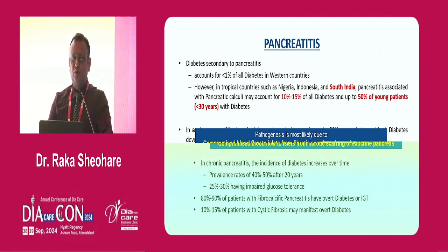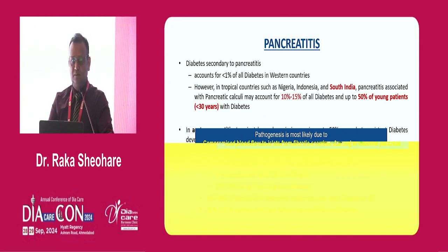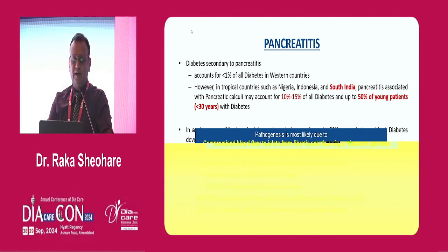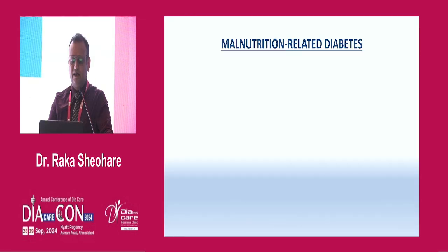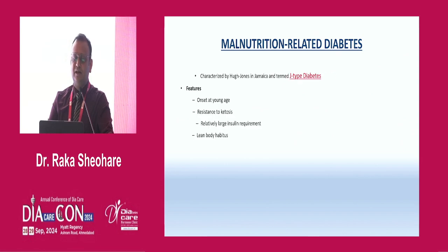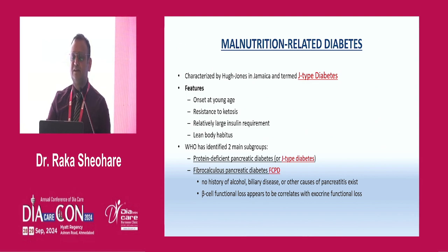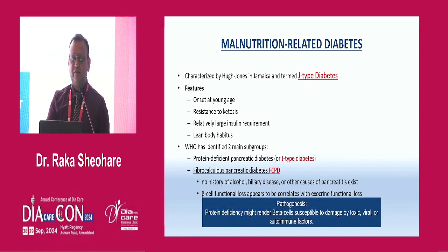80 to 90% of patients have FCPD — fibrocalcific pancreatitis — with overt diabetes or IGT. The pathogenesis is most likely due to compromised blood flow to islets from fibrotic scarring of the exocrine pancreas. Malnutrition-related diabetes has different nomenclature: from Jamaica it is called J-type diabetes; in India we call it FCPD, associated with South Indian patients. No history of alcohol, no biliary disease. Beta cell functional loss appears to be correlated with exocrine pancreatic loss. Protein deficiency may render beta cells susceptible to damage by toxic, viral, or autoimmune factors.